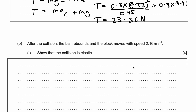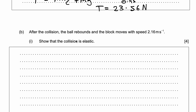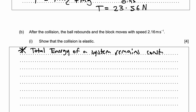Now this is a 4-mark question, part B, so it's obviously going to be slightly more challenging. After the collision, the ball rebounds and the block moves at speed 2.16 meters per second. Show that the collision is elastic. When a collision is elastic, it means that the total kinetic energy of the system remains constant — the energy before the collision equals the energy after. First, let's use conservation of momentum to find the ball's rebound speed.